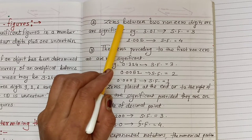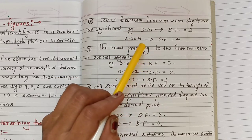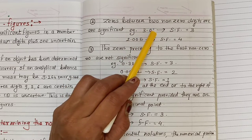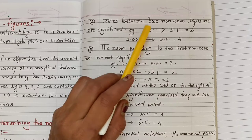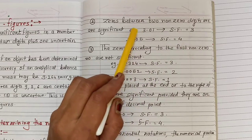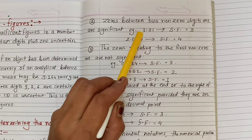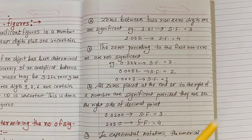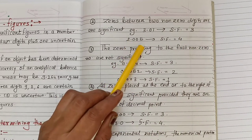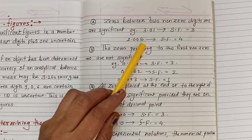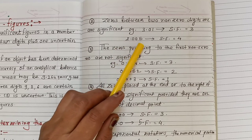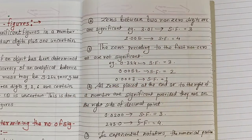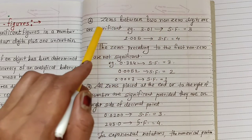When you get a zero between non-zero digits, it will also be significant. For example, 3.01 — here 3 and 1 are non-zero, and between these two there is a zero. So zero between two non-zero digits is also significant. So you count: 1, 2, 3 — the significant figure is 3. And for 2.005 — 2 and 5 are non-zero digits, and there are 2 zeros between them. So count: 1, 2, 3, 4 — the significant figure is 4. Therefore, zeros between two non-zero digits are significant.